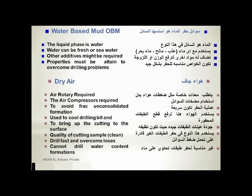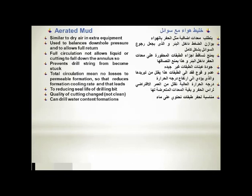However, dry air cannot be used to drill water-bearing formations. Aerated mud uses air and mud or water together to balance downhole pressure and allow for fluid return. Circulation prevents liquids and cuttings from falling down the annulus, which prevents the drill string from getting stuck. Total circulation losses — meaning no returns to surface — eliminate formation cooling and lead to increased temperature, which reduces the life of the drill string, especially the bit. A disadvantage is that cuttings quality is not as good as with dry air due to contamination. However, aerated mud can be used to drill water-bearing formations.